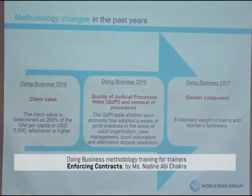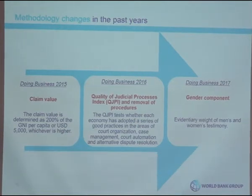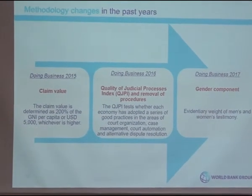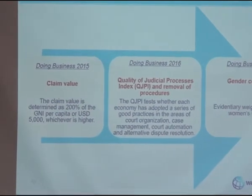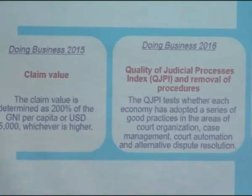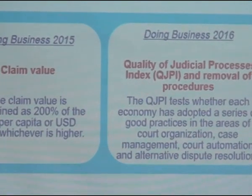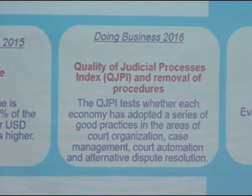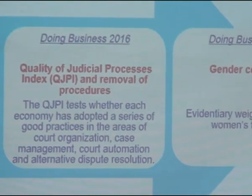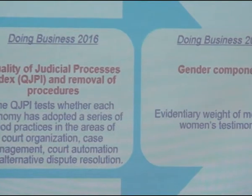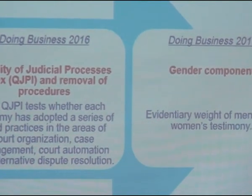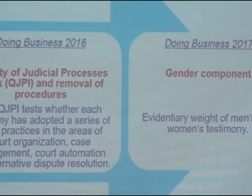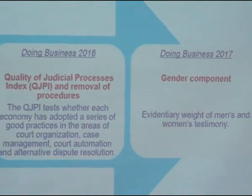There were methodology changes in recent years. In Doing Business 2015, the claim value was set at either 200% of GNI per capita or $5,000 USD, whichever is higher. In Doing Business 2016, procedures were removed and replaced with the quality of judicial processes index. In Doing Business 2017, we began looking at the evidentiary weight of men's and women's testimony.